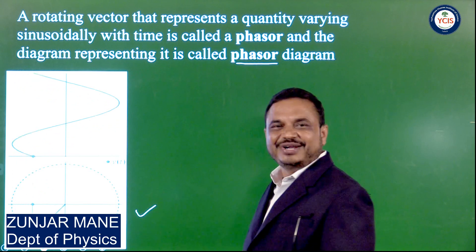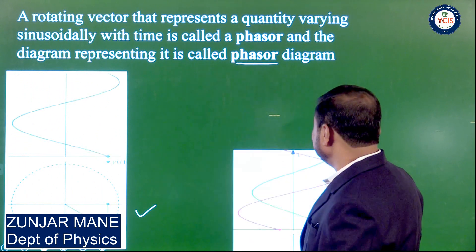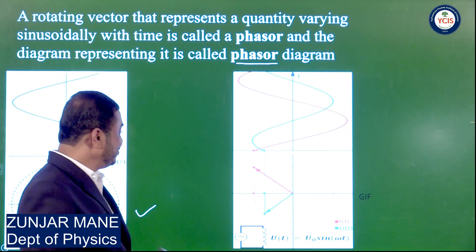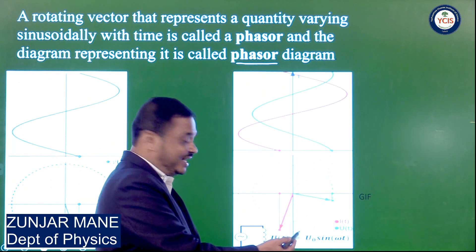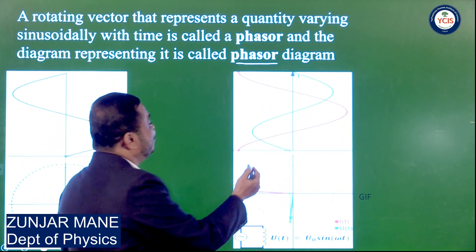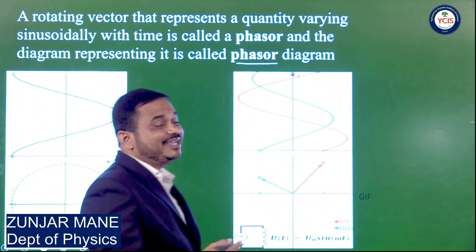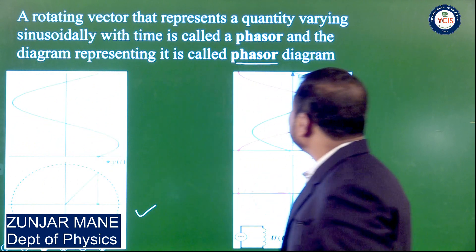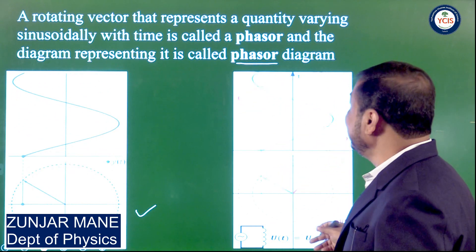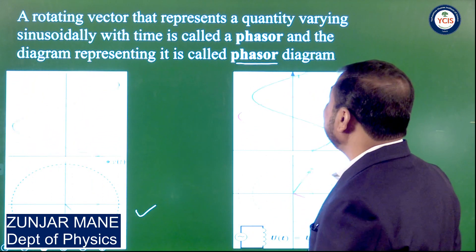Here there is only one vector, but there may be two vectors — one representing voltage and one representing current. See another animation. Here there are two rotating vectors: one indicated by blue color and the other by red color, and there is a phase angle between those two vectors. One quantity may be current and the other may be voltage. These rotating vectors which represent the quantity varying sinusoidally with time are called phasors, and the diagram representing them is called a phasor diagram.